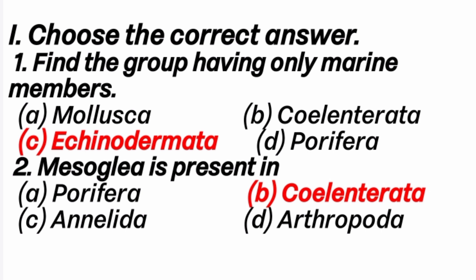Second question: Mesoglea is present in — answer is B option, Coelenterata. The diploblastic animal's body wall is made up of ectoderm and endoderm. Mesoglea is present between the ectoderm and endoderm, and this is mostly present in Coelenterata animals.